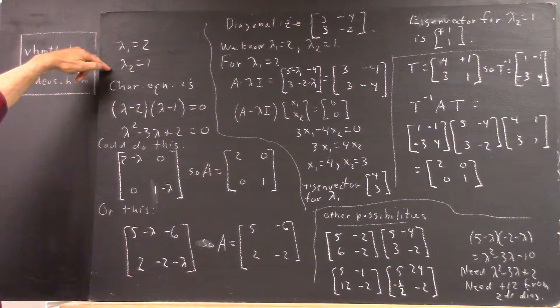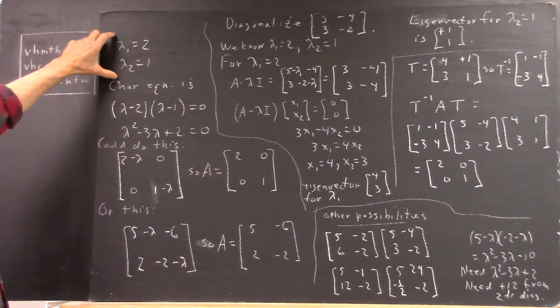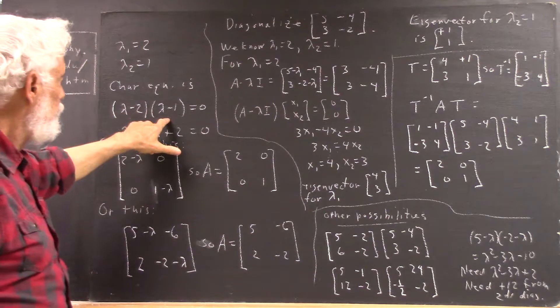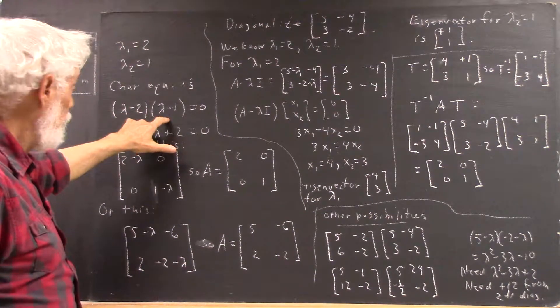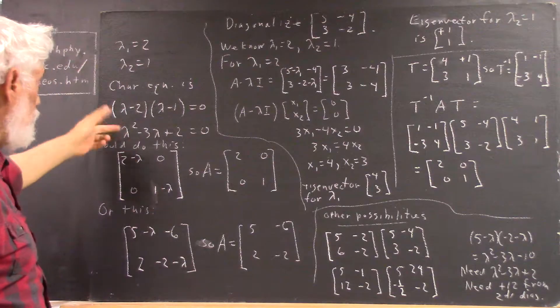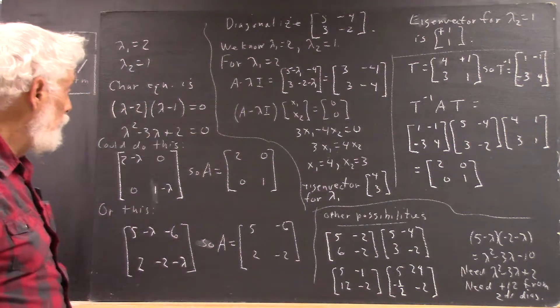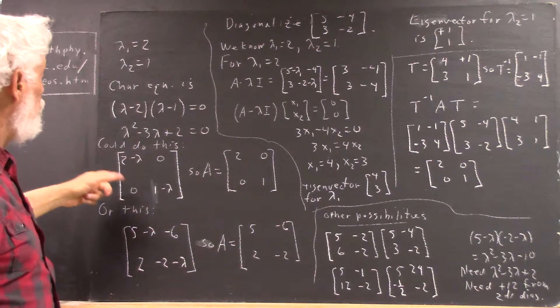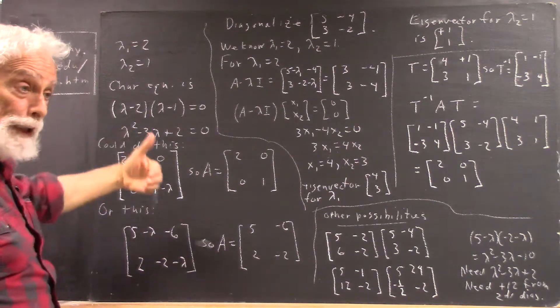If these are our eigenvalues, our characteristic equation will be either this or a constant multiple of this. So we're just going to assume this is our characteristic equation, and of course we expand out and have lambda squared minus 3 lambda plus 2, and now we try to find our A minus lambda I matrix.